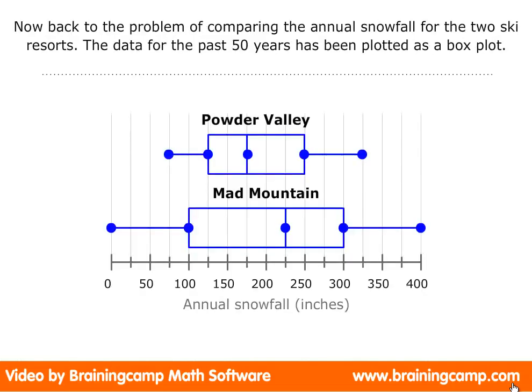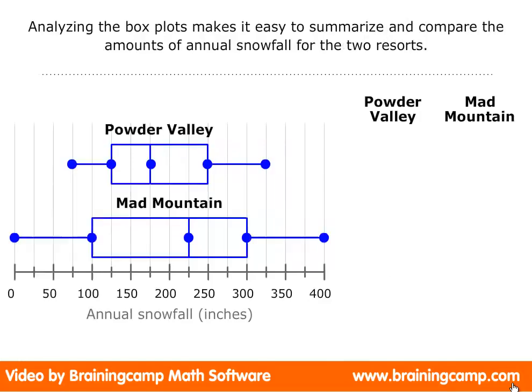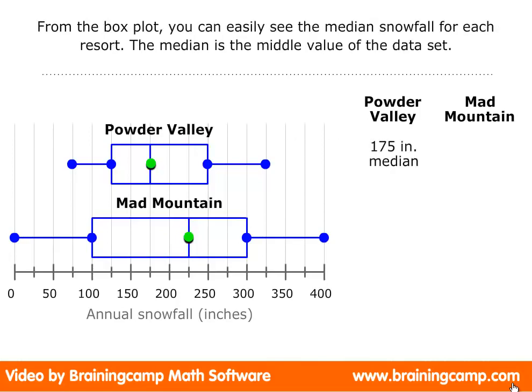Now, back to the problem of comparing the annual snowfall for the two ski resorts. The data for the past 50 years has been plotted as a box plot. Analyzing the box plots makes it easy to summarize and compare the amounts of annual snowfall for the two resorts. From the box plot, you can easily see the median snowfall for each resort.